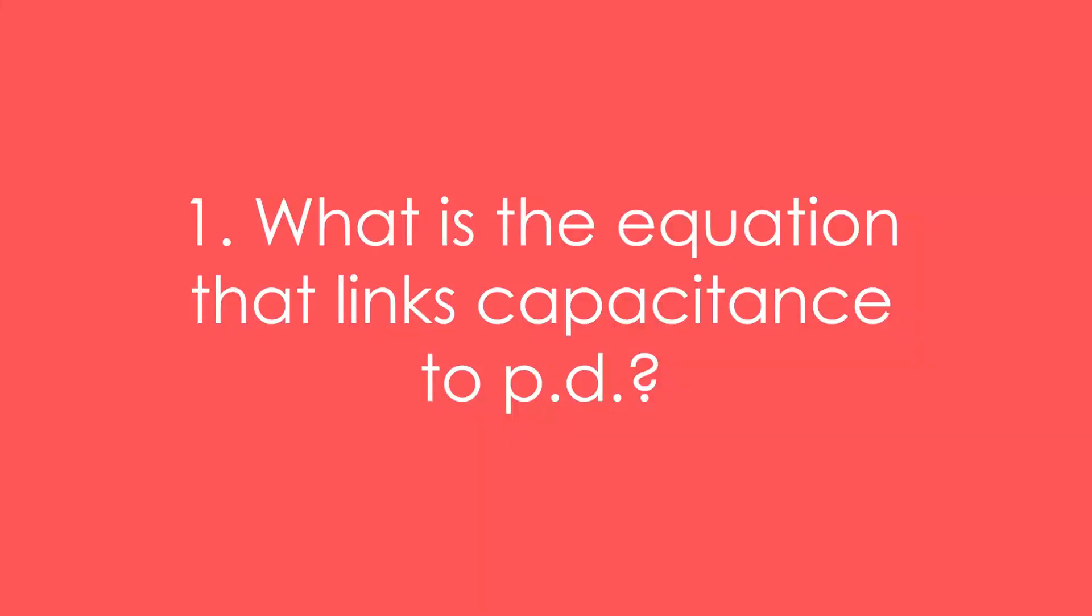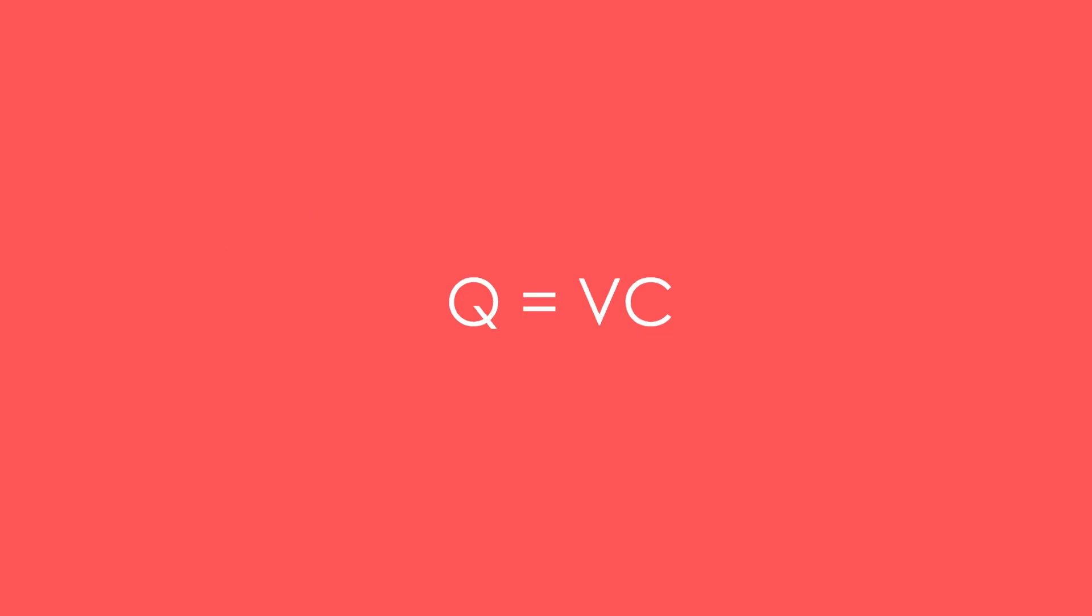Here's 20 questions on capacitors. Number one, what is the equation that links capacitance to PD? Q equals VC, charge equals PD times capacitance.